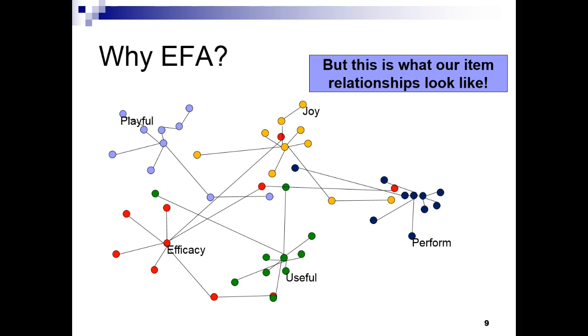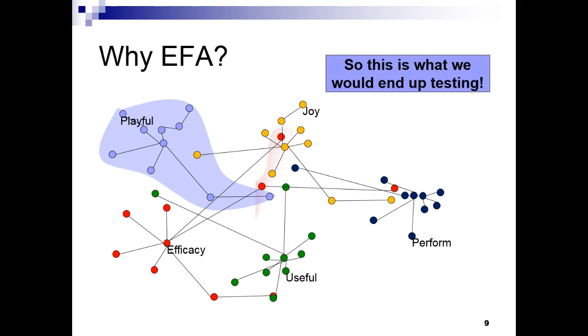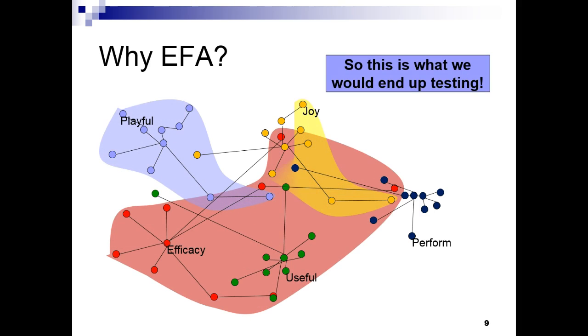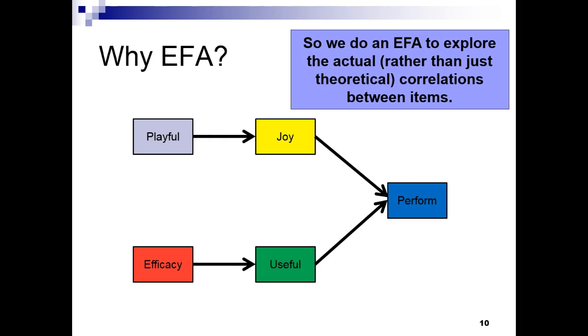For example, the blue circles represent the playfulness items. Notice how some of them are tightly correlated or close together, while a couple of them are out in right field and are more correlated with items from other constructs. Without doing an EFA, this muddy mess is what we would end up testing. Can we even say that usefulness is a distinct construct from efficacy? Or that one of the items from joy doesn't really belong to the playfulness items?